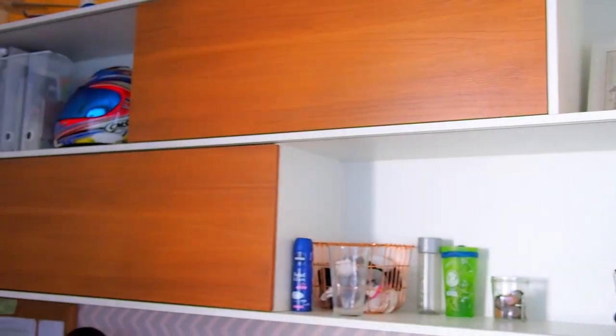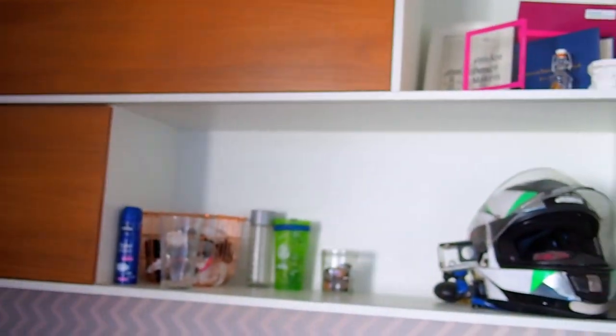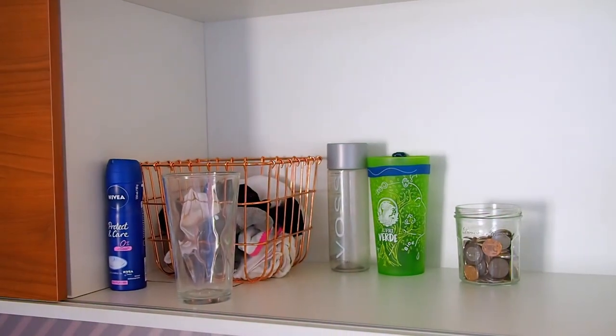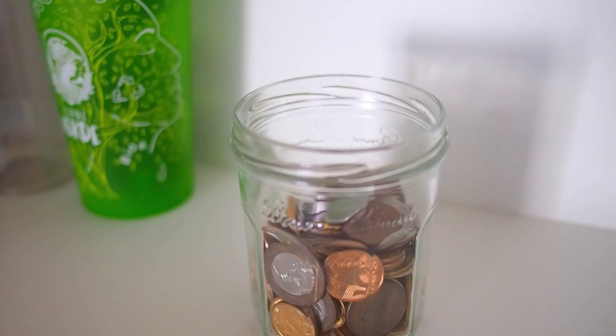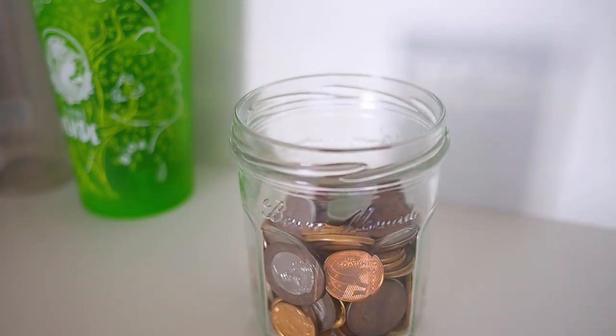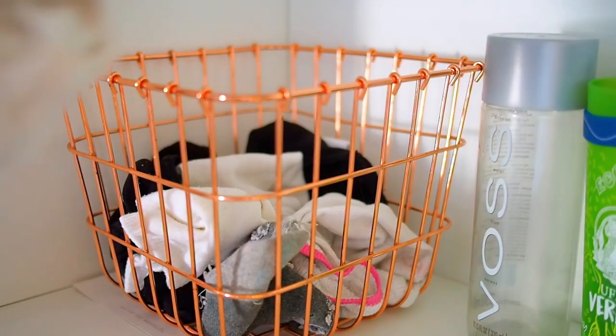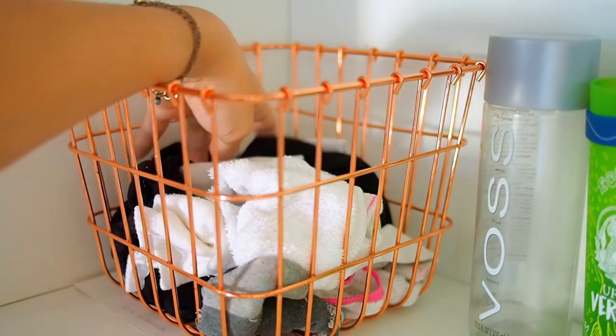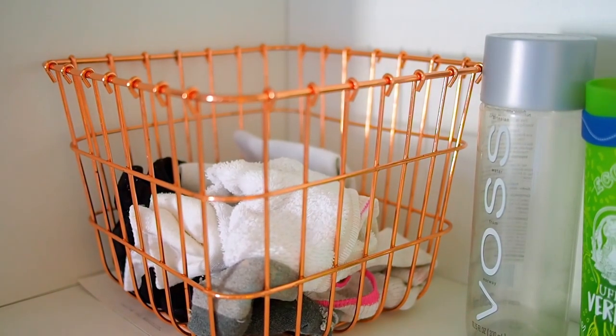Moving on, I also have these shelf units on top of my desk that I keep a lot of different things. Starting off in this corner I have my helmet and a couple of socks. I also have a coin holder, which I use to just put the coins I get daily and by the end of the year I'll check out how much money I have. I decided to leave my socks here because it's easier to grab them.